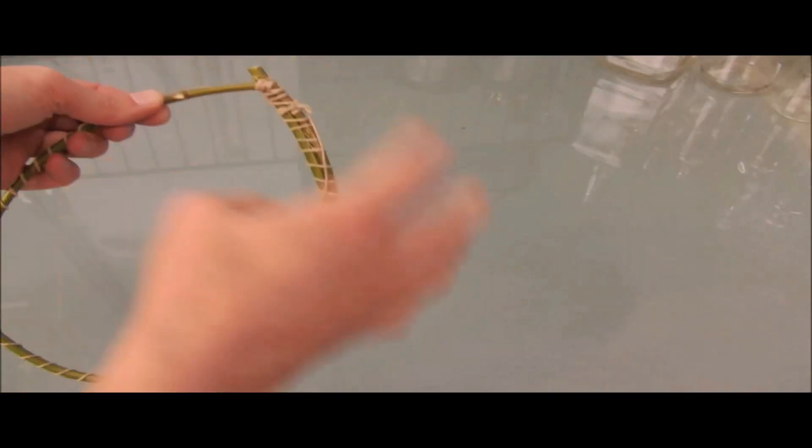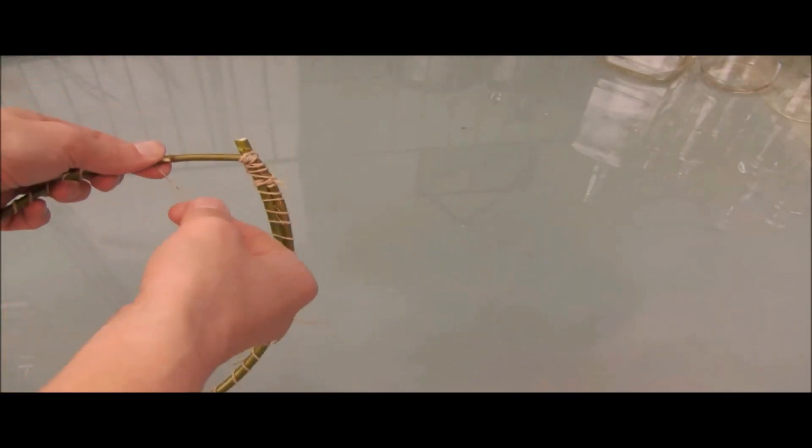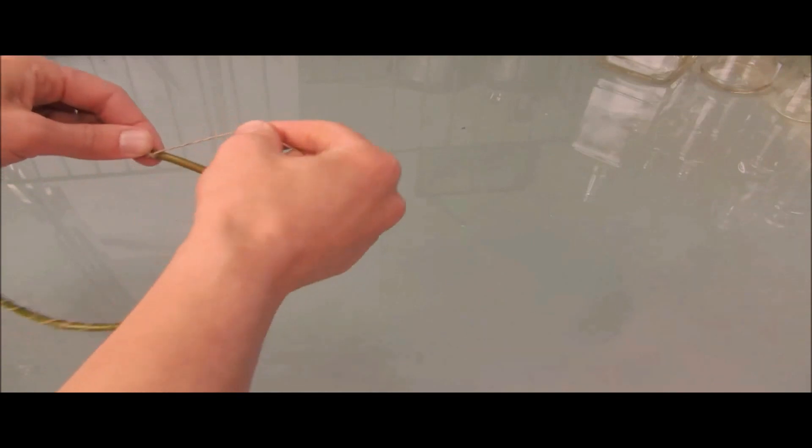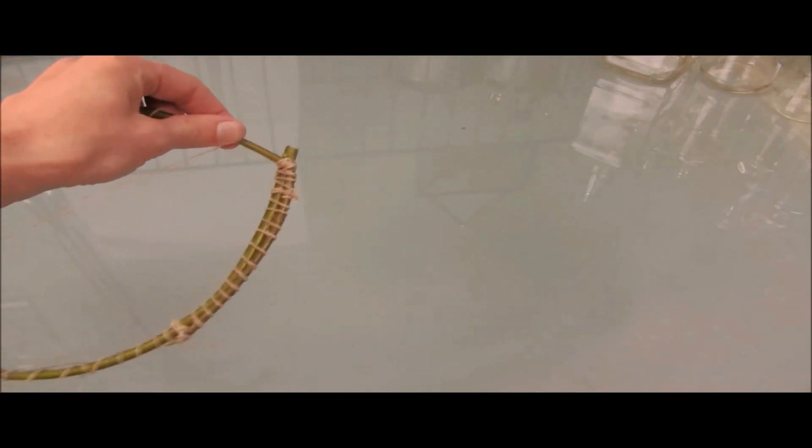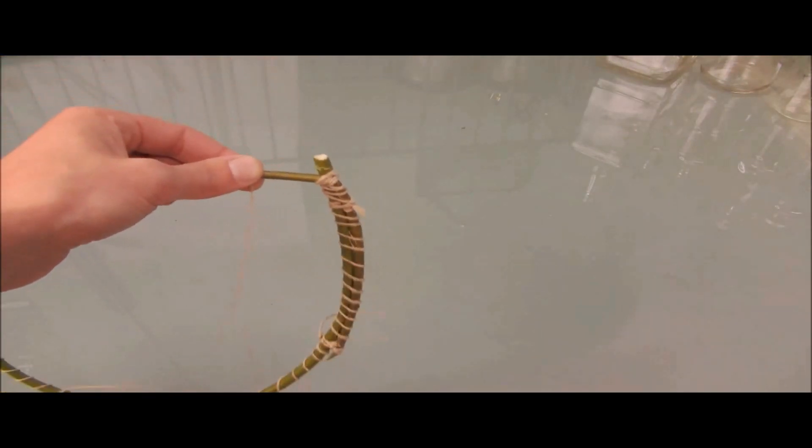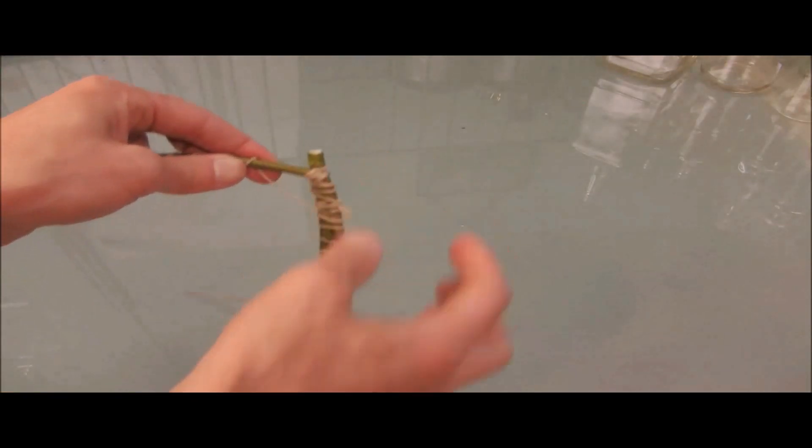Now that I almost have the whole hoop looped with the twine or the string, I'm going to go ahead and leave the excess on here. I'm going to tie it off, but I'm going to leave it attached because I want to go ahead and use that extra when I'm ready to attach the feathers and the beads. I'm going to loop this around a few more times, and then I'll tie it off right there.